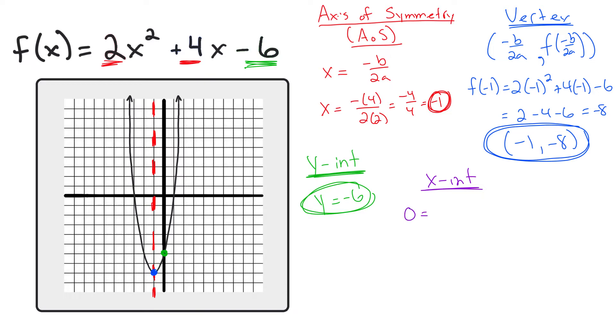So that's 0 equals 2x squared plus 4x minus 6. I can factor out a 2. That's 2 times the quantity x squared plus 2x minus 3. I'm going to factor that, and I would get 2 times x plus 3 times x minus 1.